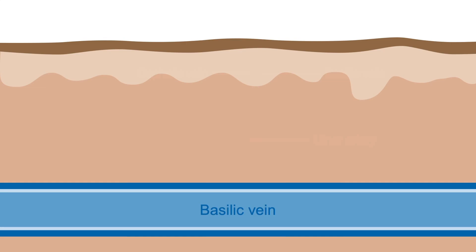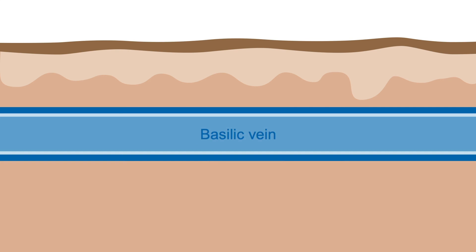The basilic vein is naturally deeper in the tissue and often needs to be surgically lifted to a more superficial tissue to be more accessible for cannulation. This procedure is called a basilic vein transposition, or superficialization.